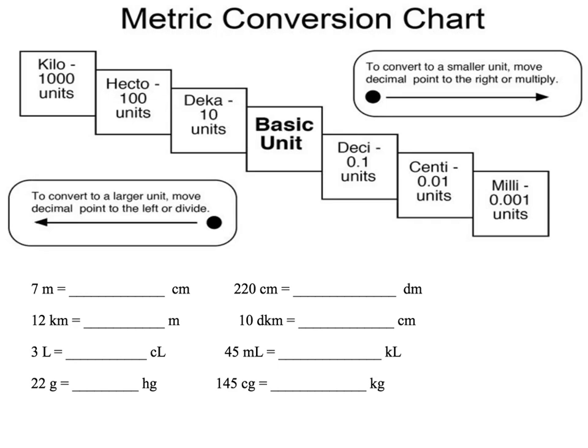I'm first going to teach you the shortcut method for metric conversions. In the center of our basic number line that we have going across here is your basic unit. Basic units may be measured in grams for weight, in liters for volume, and in meters for length.